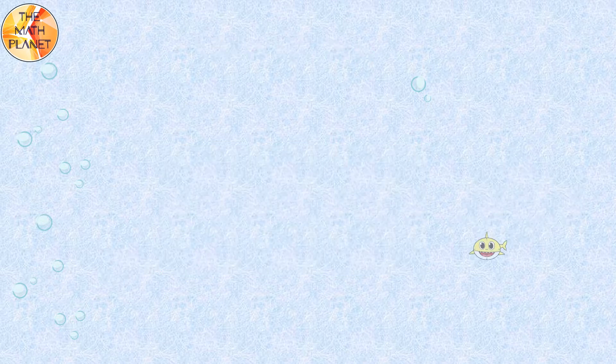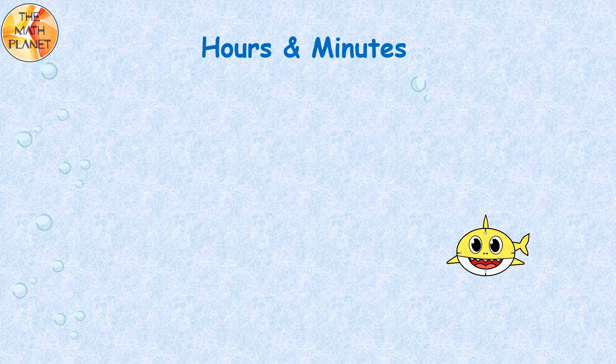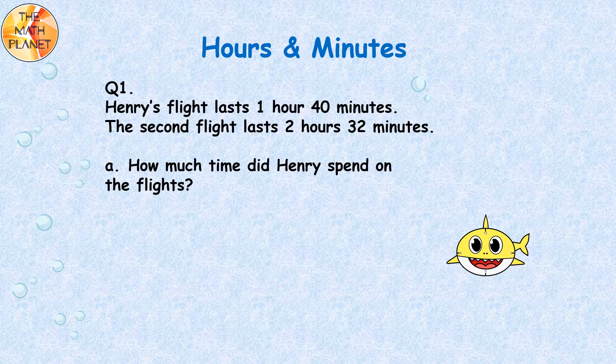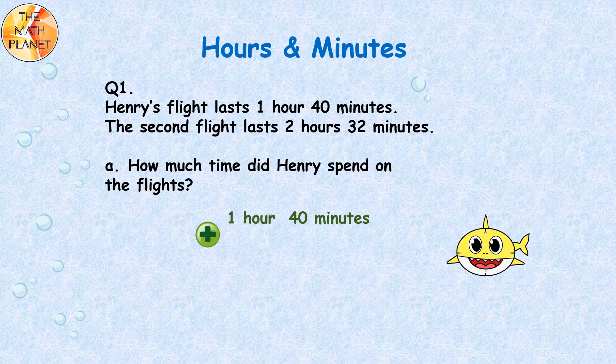Our first word problem involves hours and minutes. Let's read question 1. Henry's flight lasts 1 hour 40 minutes. The second flight lasts 2 hours 32 minutes. How much time did Henry spend on the flights? We will add the times for both flights, so our equation will be 1 hour 40 minutes plus 2 hours 32 minutes.